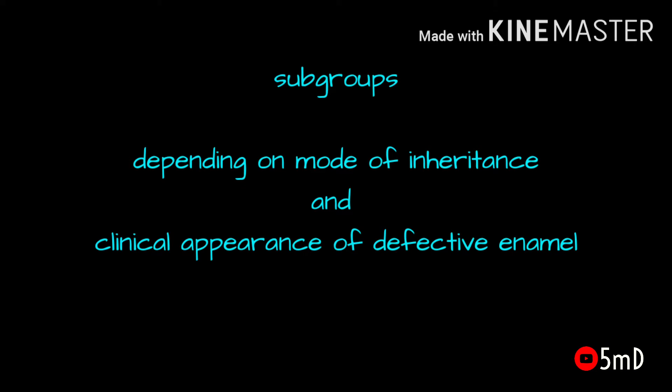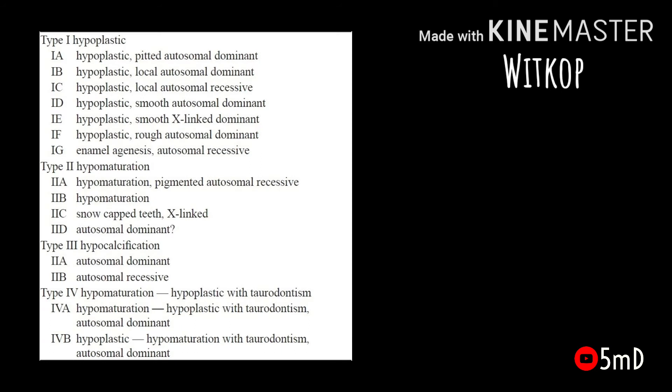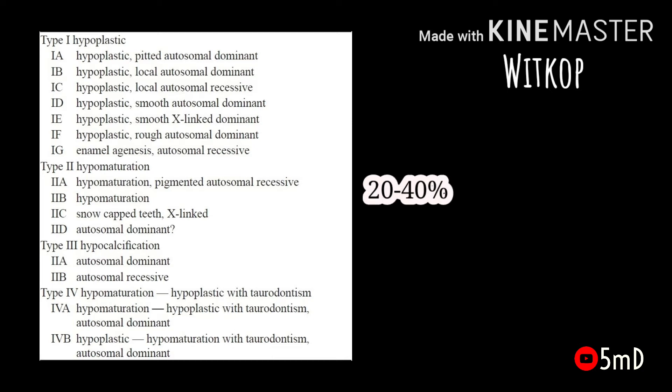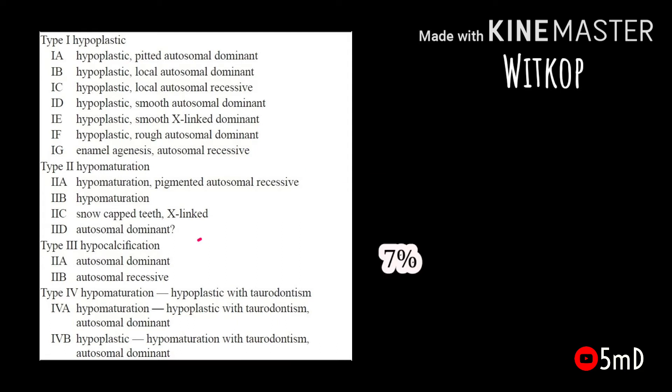The classification of amelogenesis imperfecta was given by Whitcorp in 1989. Hypoplastic amelogenesis imperfecta represents 60 to 73% of all cases. Hypomature amelogenesis imperfecta represents 20 to 40% of cases, whereas the hypocalcification type represents only 7% of cases.